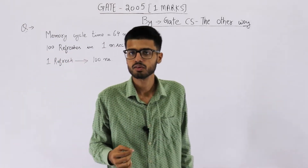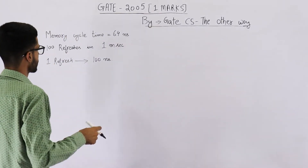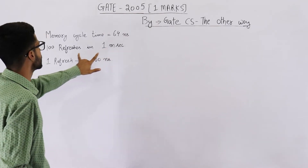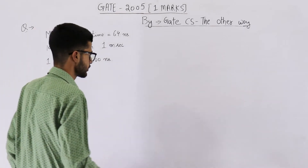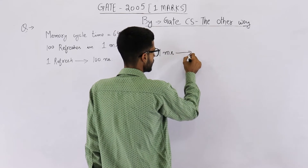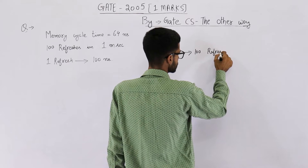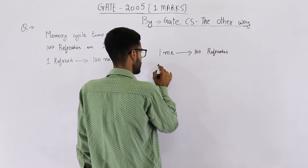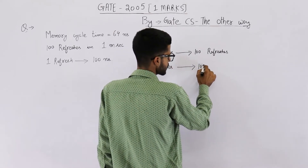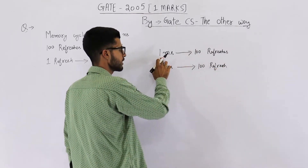So they are asking: if memory cycle time is 64 nanoseconds, then how much percentage of 64 nanoseconds is spent for refreshing the DRAM chip? Also, in every one millisecond you need to refresh it 100 times. So in one millisecond it needs to be refreshed 100 times.